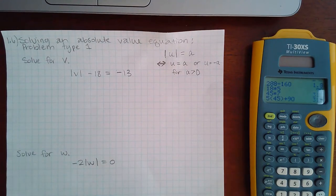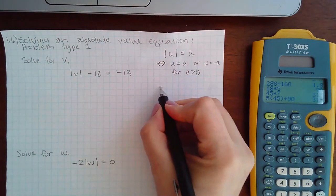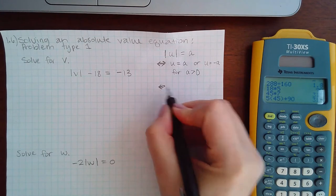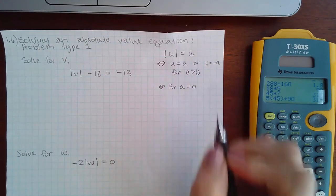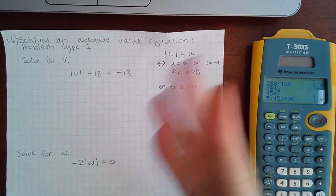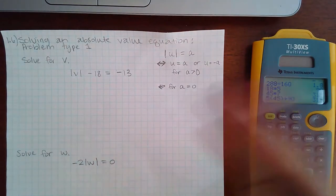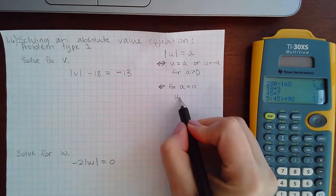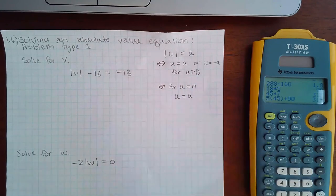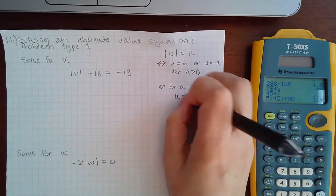However, for a equal to zero, there's no such thing as positive and negative, so then you would literally just take what's on the inside and set it equal to zero, and then you would solve for that variable or that variable expression.